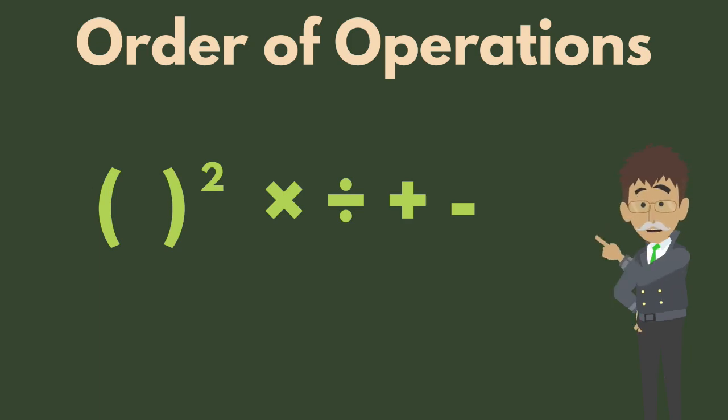The order of operations is important for ensuring that math statements are solved correctly. It is also essential for understanding and communicating mathematical ideas. It is sort of like a recipe for math.